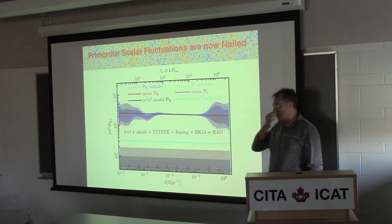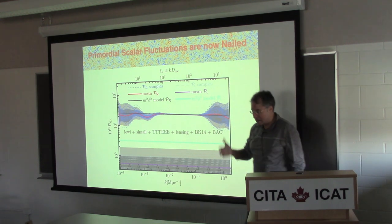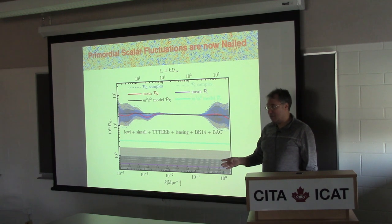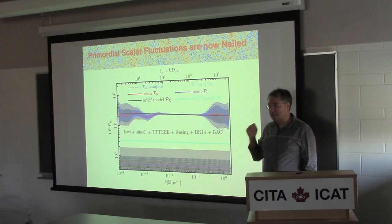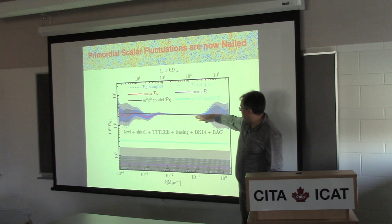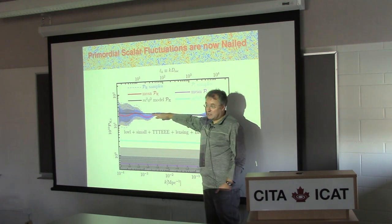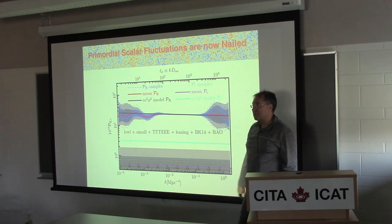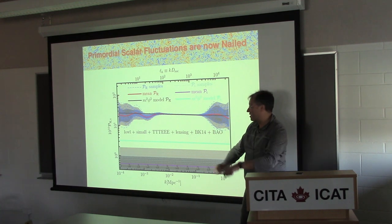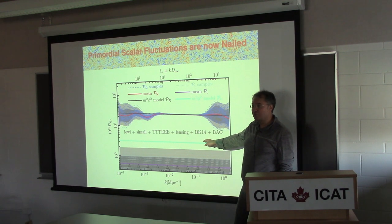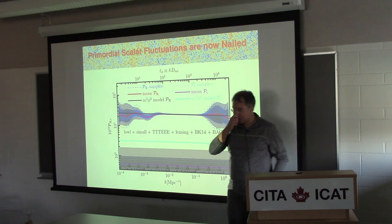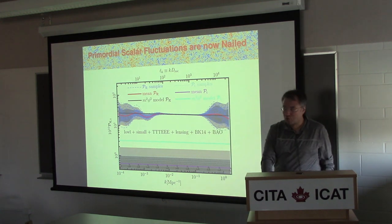No matter how you slice it or dice it - whether you look at temperature (gravitational potential directly) or polarization (sloshing around in the same gravitational potential) - it's nailed down to essentially a power law, slightly not scale-invariant, primordial fluctuation spectrum. So it starts looking like inflation. The question is can we get the B mode - and then it would be unambiguous. If you have two of them nailed down, it would be really hard to argue it's anything else besides inflation.